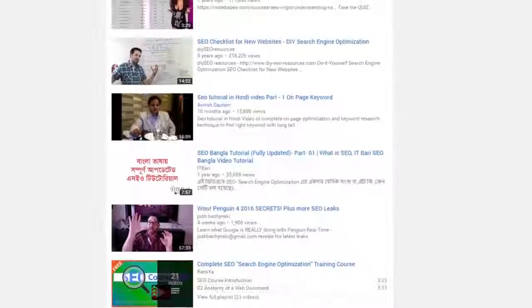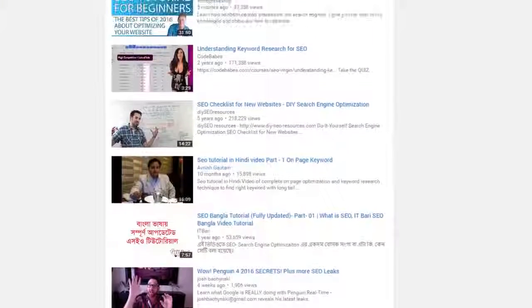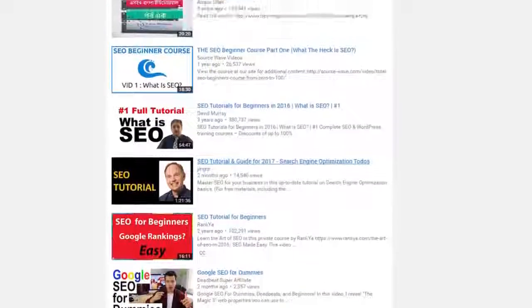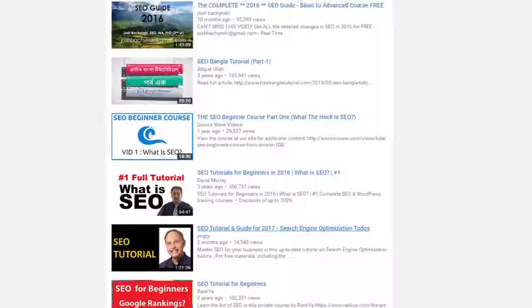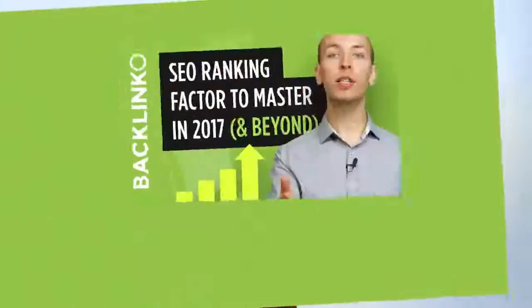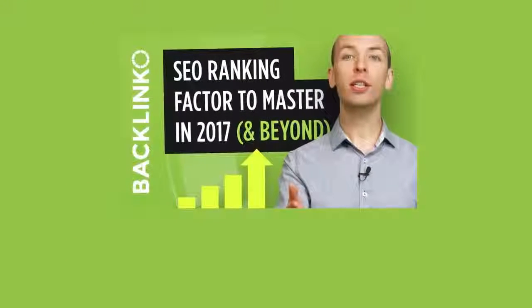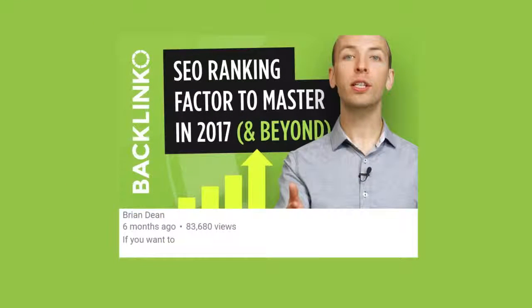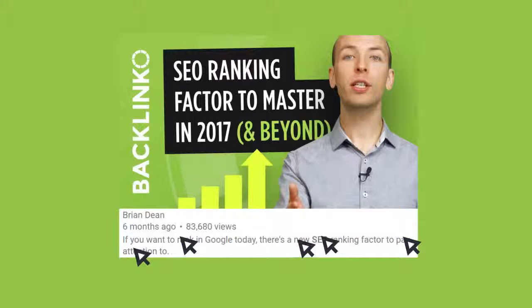Finally, you want to write something compelling in the first few lines of your description. Most people put a link to their website or channel here, and it's a huge mistake. Nothing looks less enticing to click on than a link to someone's website. Instead, write a sentence or two that includes your target keyword in a compelling way. For example, in my SEO video, my first sentence is, If you want to rank in Google today, there's a new SEO ranking factor to pay attention to. And this attention-grabbing line gets more people to click on my result.